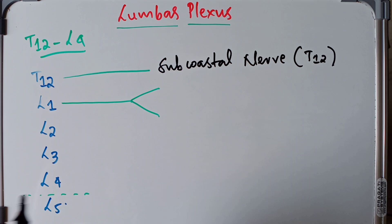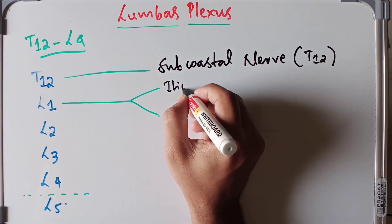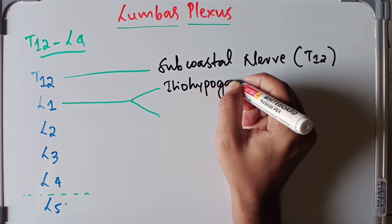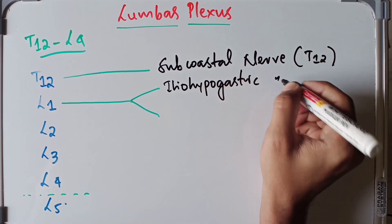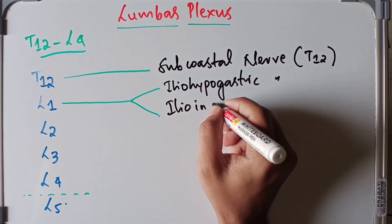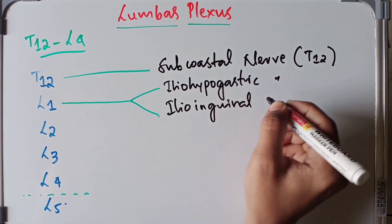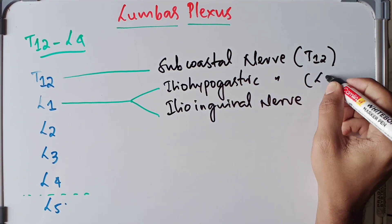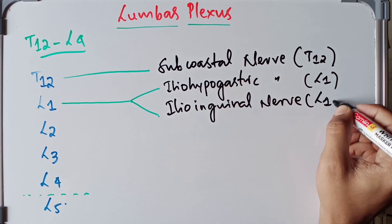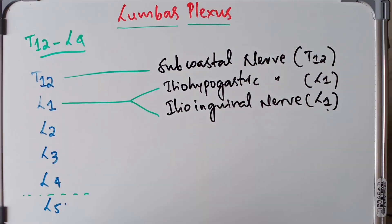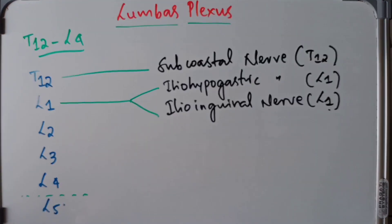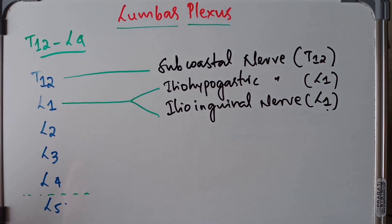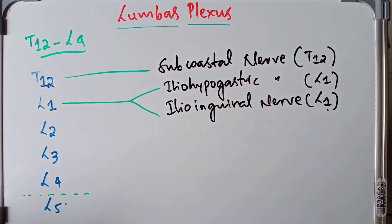From L1 we have two branches: the iliohypogastric nerve and the ilioinguinal nerve. Both derive their branches from the L1 spinal segment. Then we have another nerve called the genitofemoral nerve, which receives its branch from L1 as well as the L2 spinal segment.